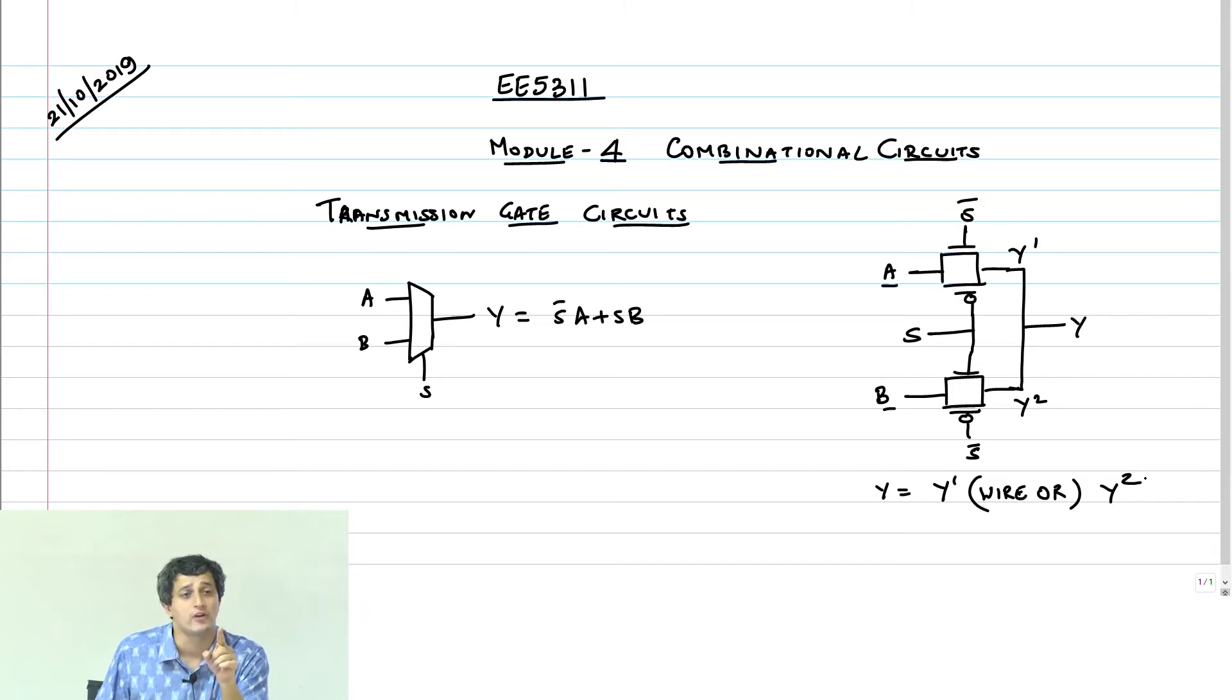And therefore, I can do Y equals Y1 wired-OR of Y2. This is what is really saving me plenty of gates. Because it goes into high impedance state, I can do wired-OR connection and I can do a wired-OR connection for any number of such transistors, transmission gates.